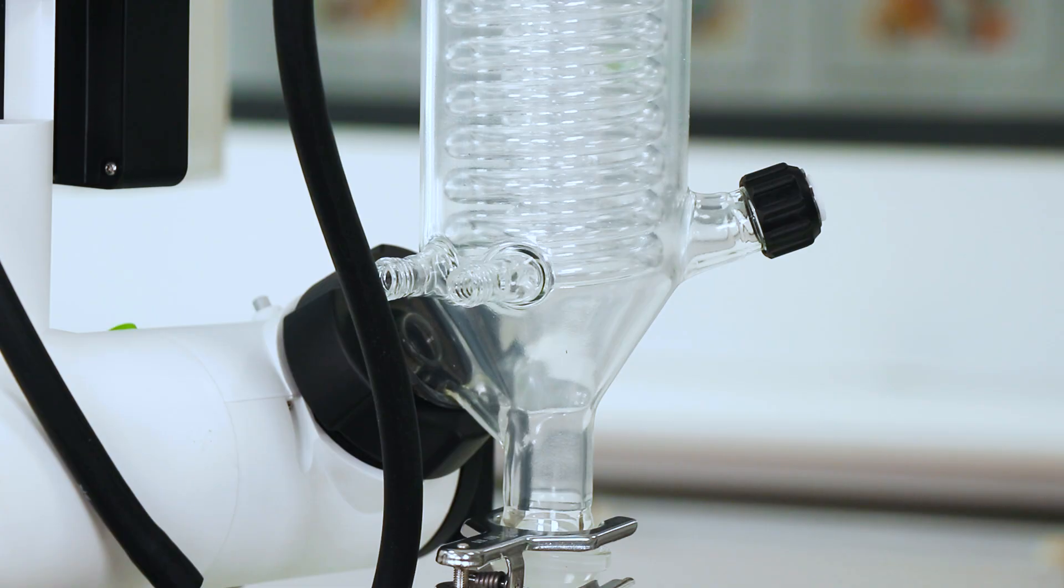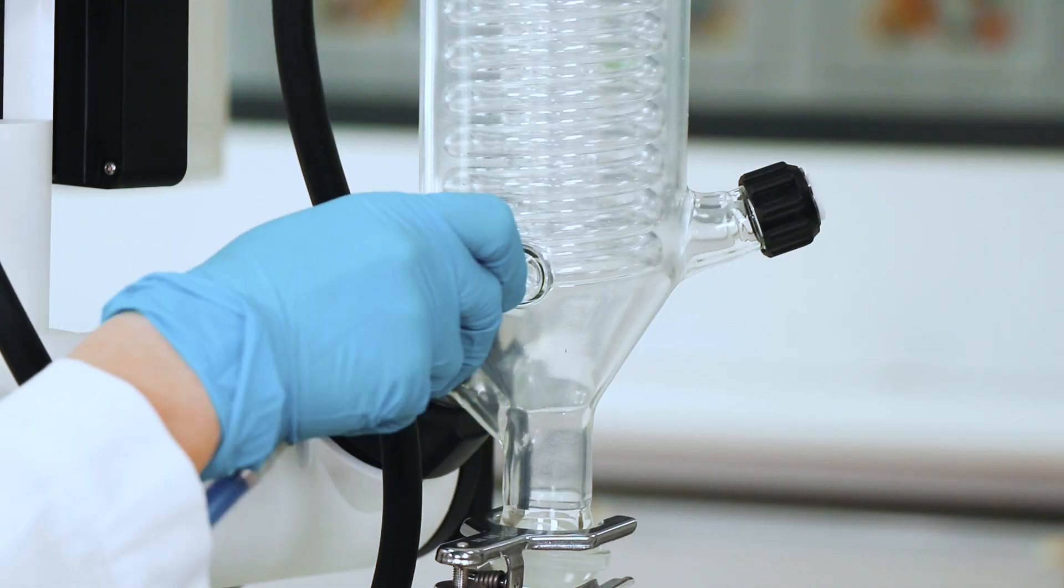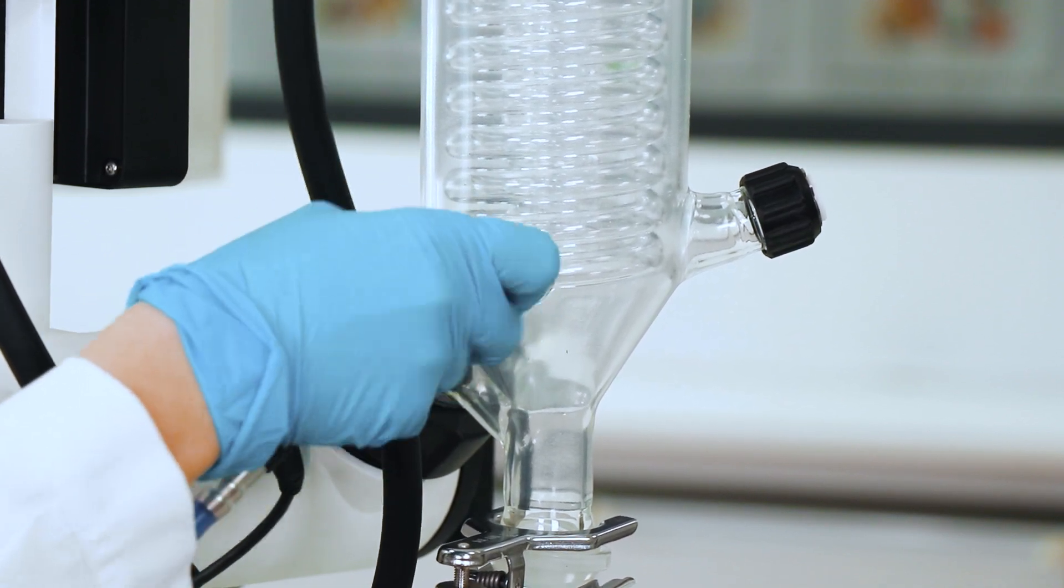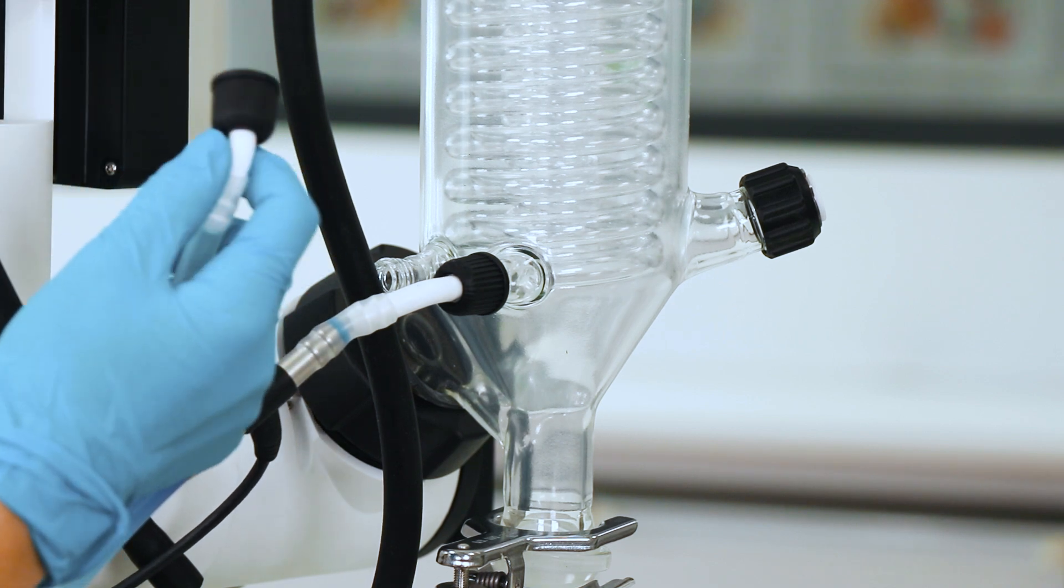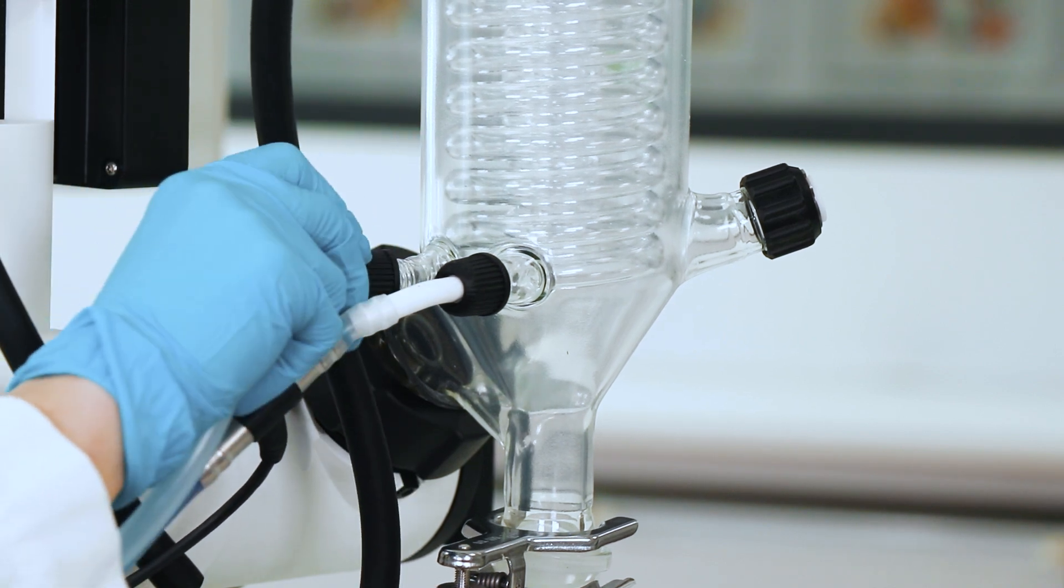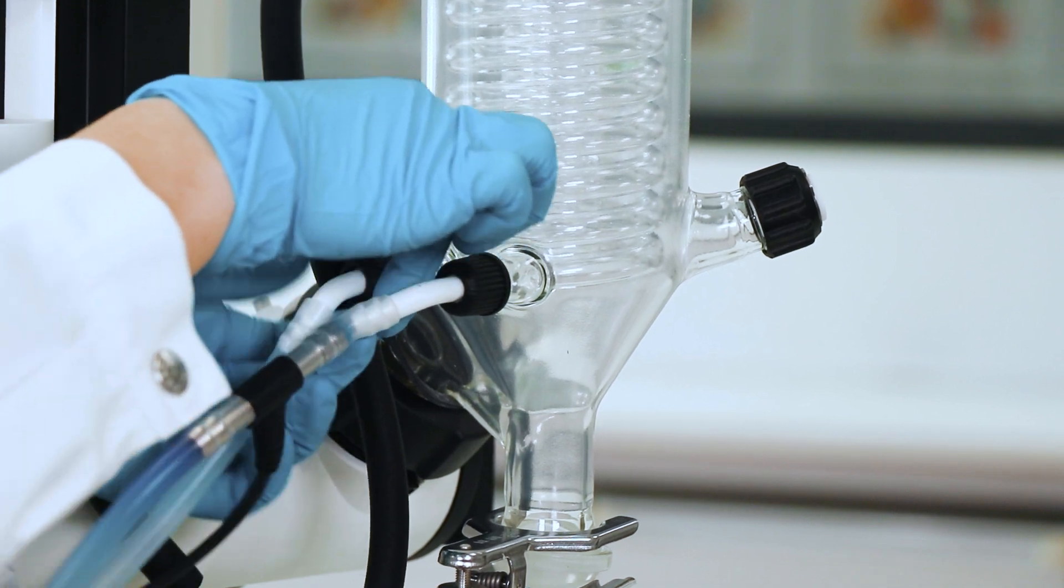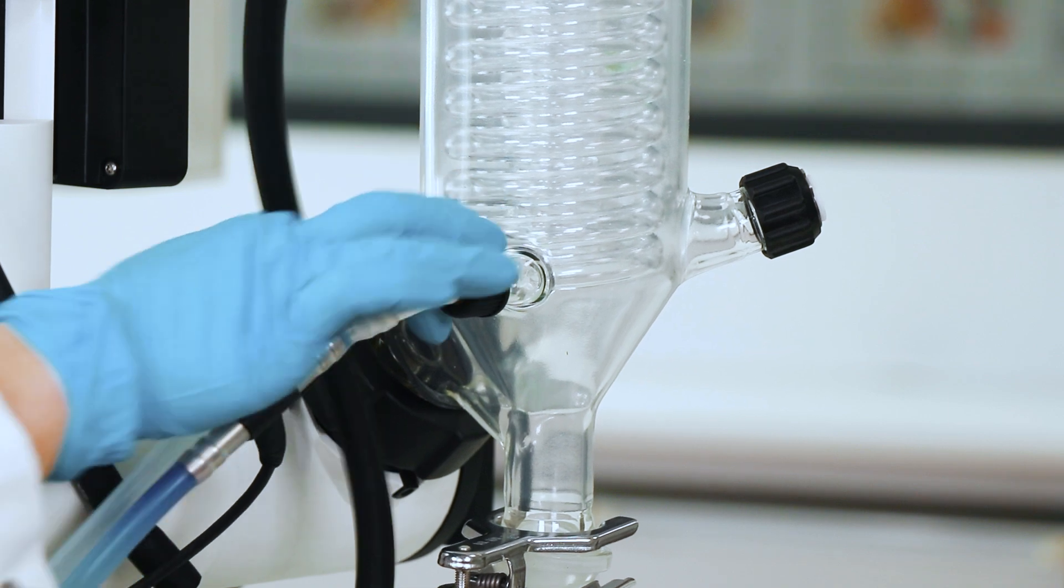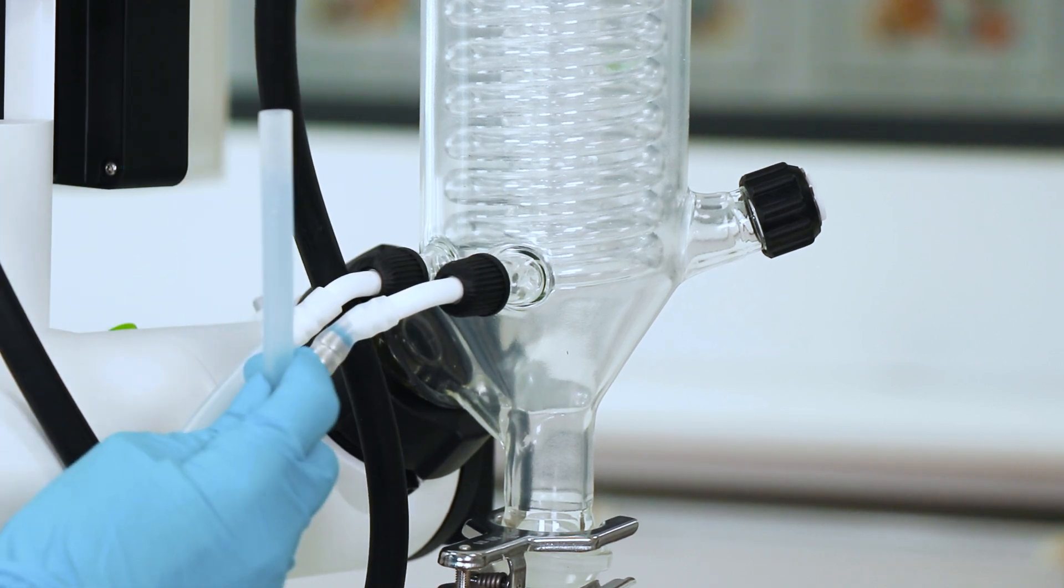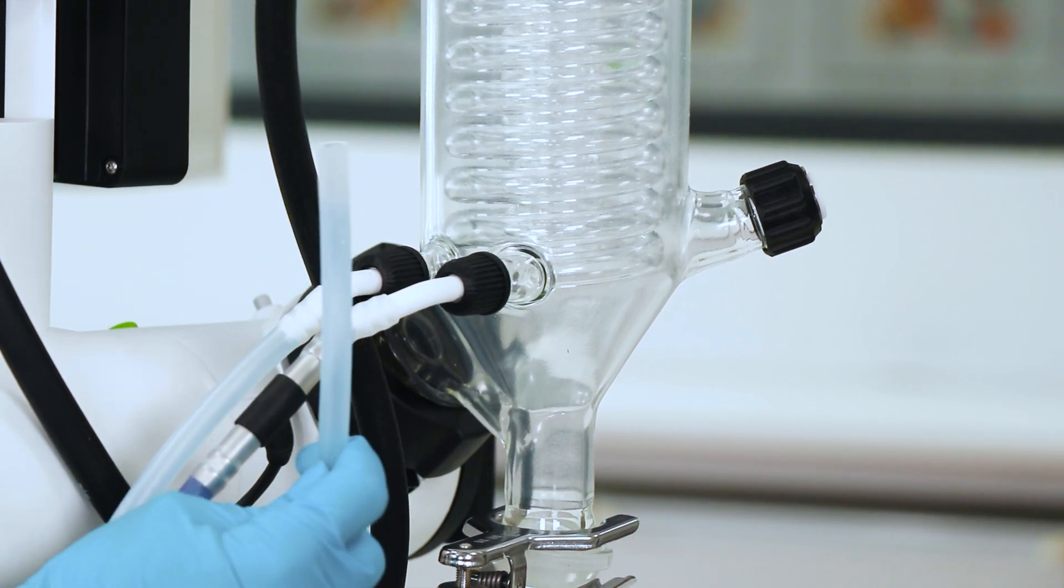So then you take the same tube and you connect it to one of the outlets here. And you take a second tube that's also connected to a nipple and connected to the other one. And the end of this tube, you can just connect to your water outlet.